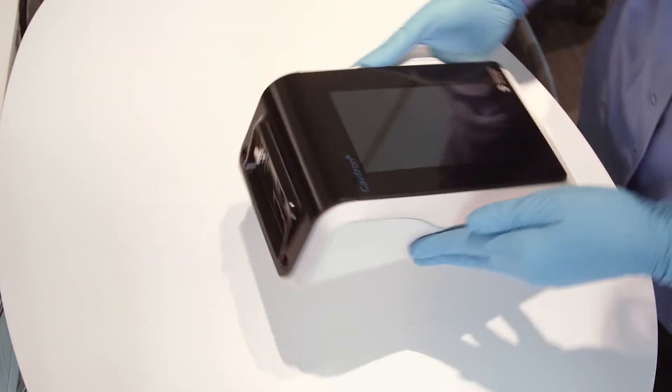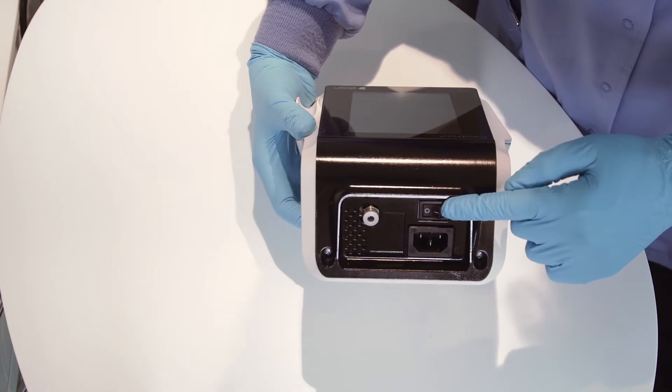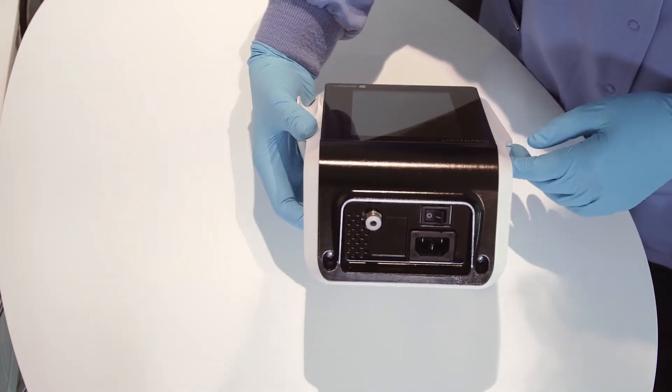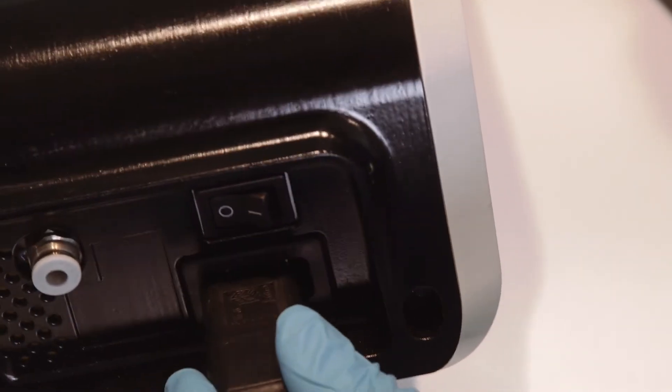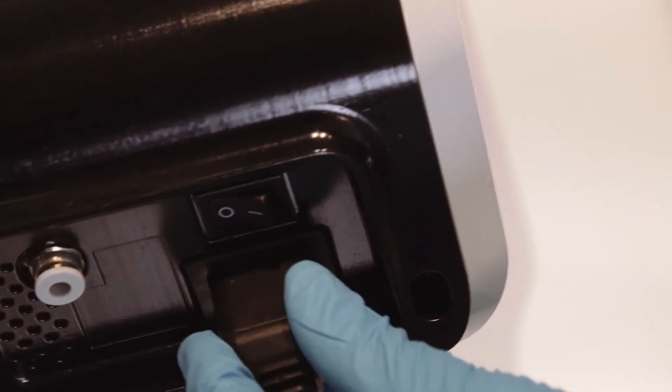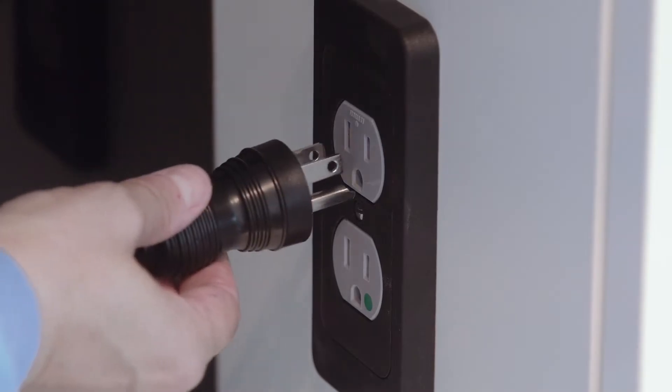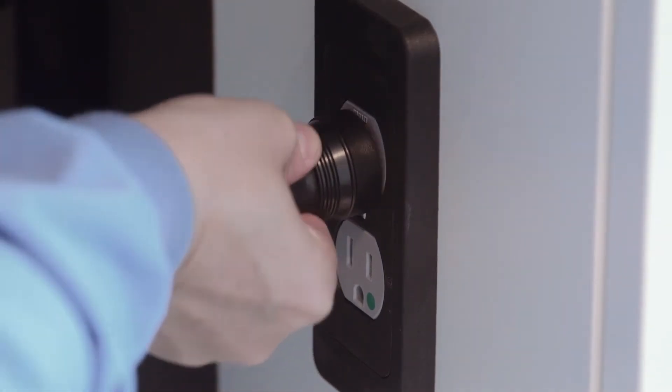To begin, please verify that the main power on-off switch, which is located at the back of your system, is set to the off position before proceeding. To connect the AC power cord, insert it into the power input on the back of the system and insert the pronged plug into the AC wall outlet.